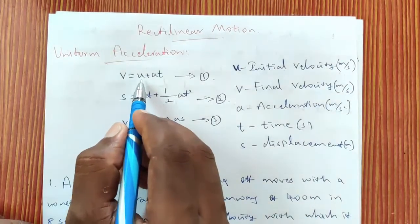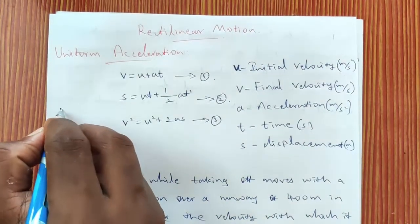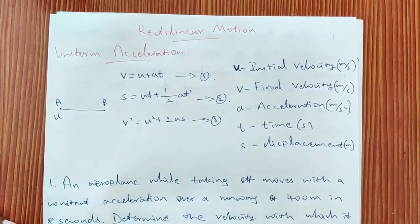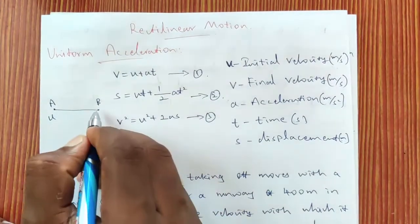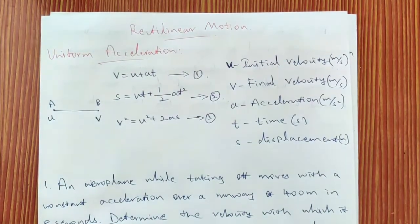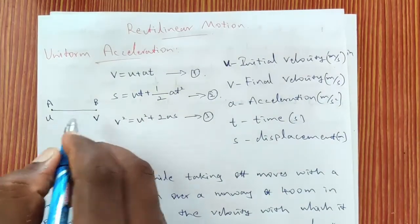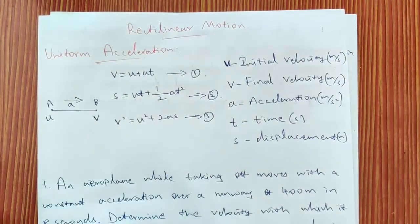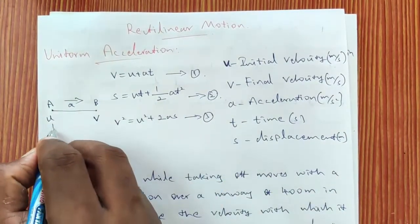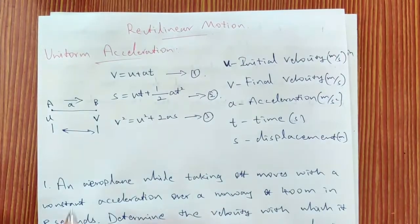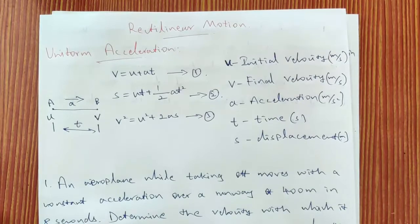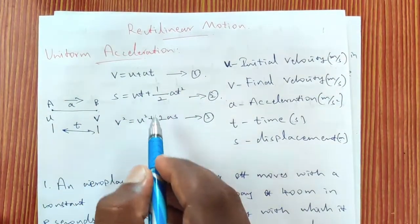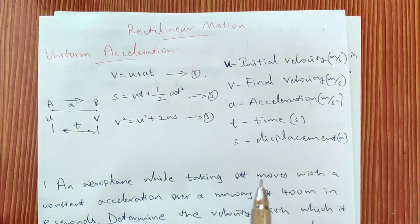Here, u is the initial velocity. If a particle is moving from point A to point B, at point A the particle has an initial velocity u, and at point B the particle has a final velocity v. In between, to increase the velocity from u to v, a constant acceleration a is applied. The time taken to cover the distance from A to B is t, and the displacement is the distance between point A and point B.